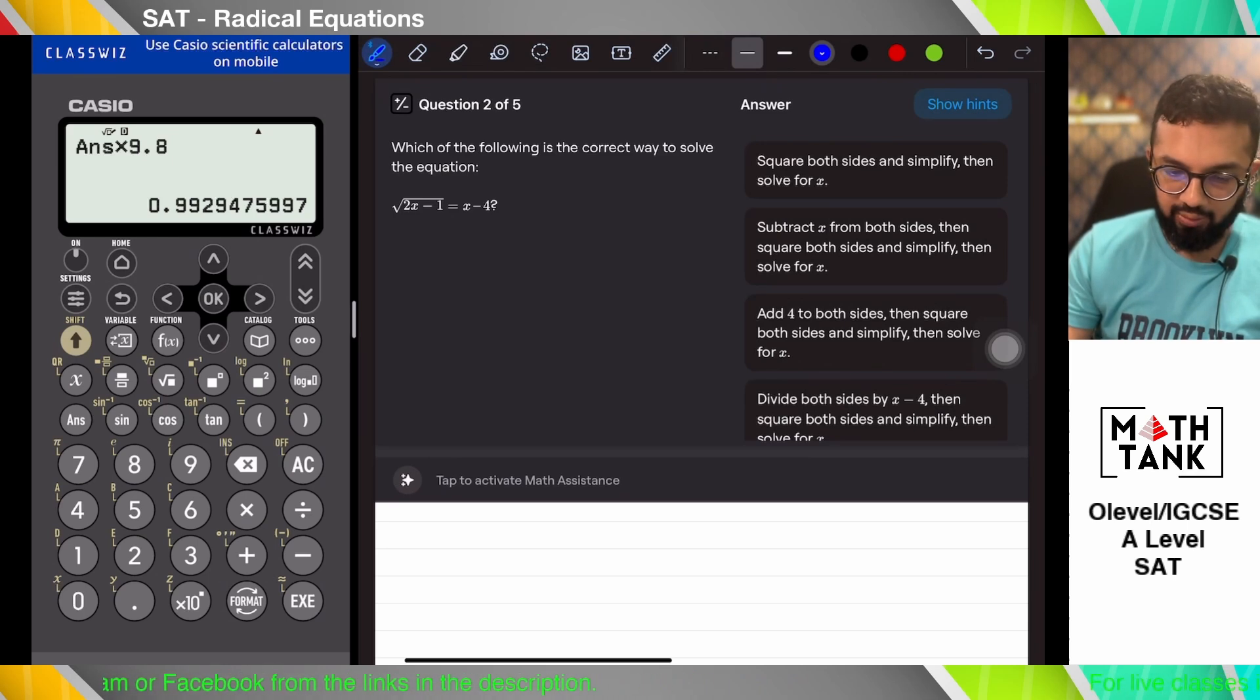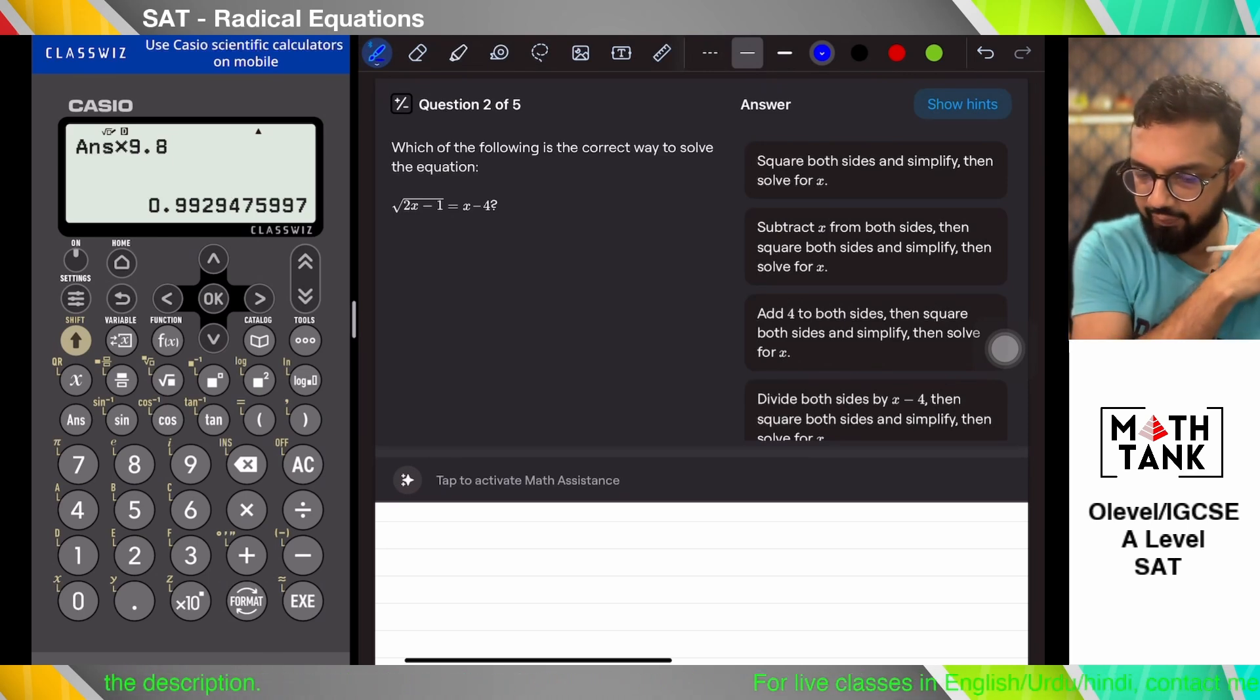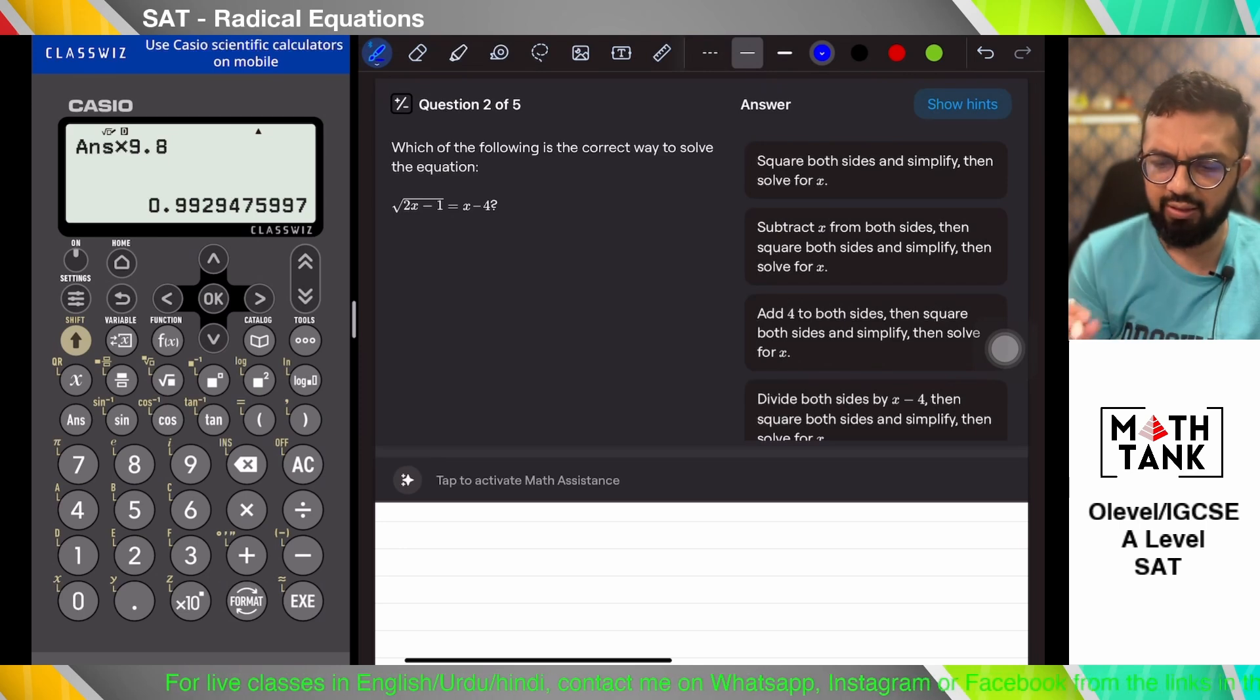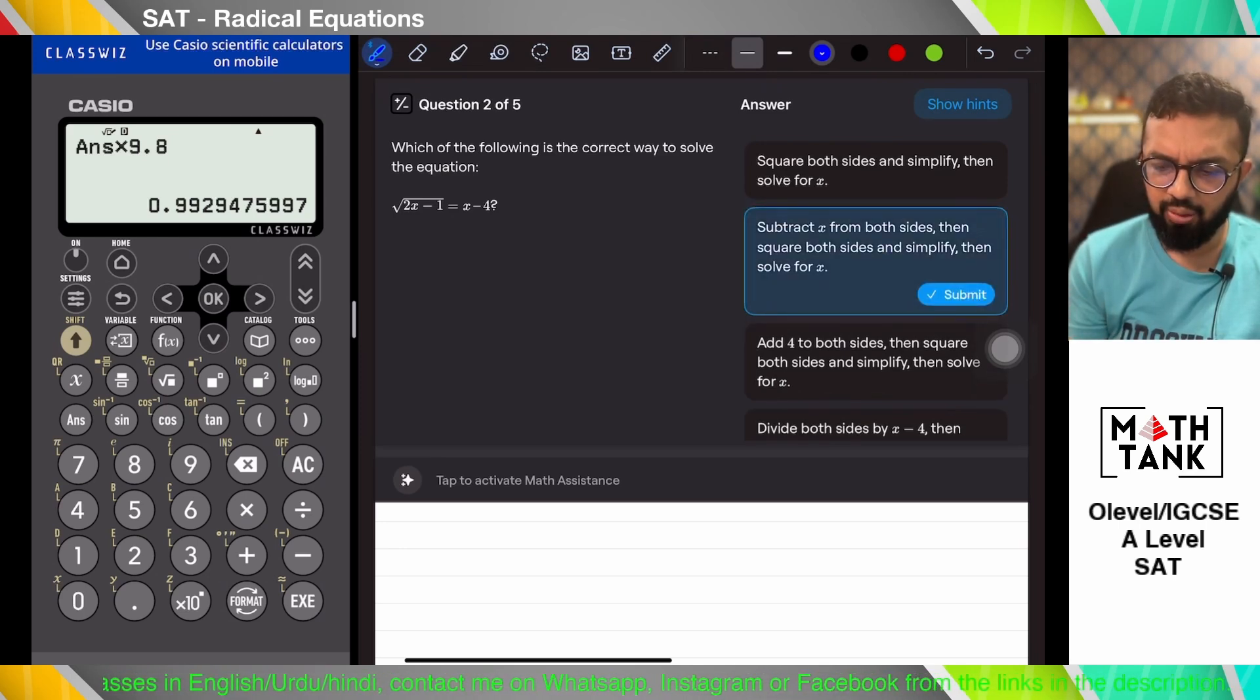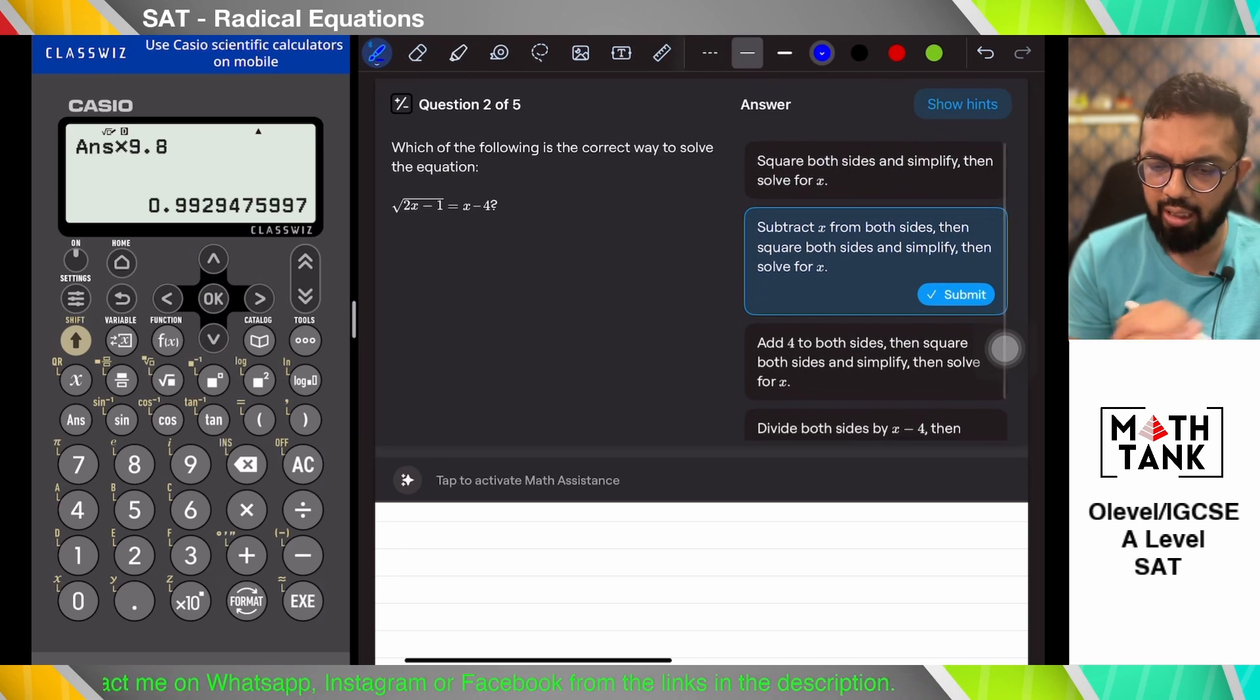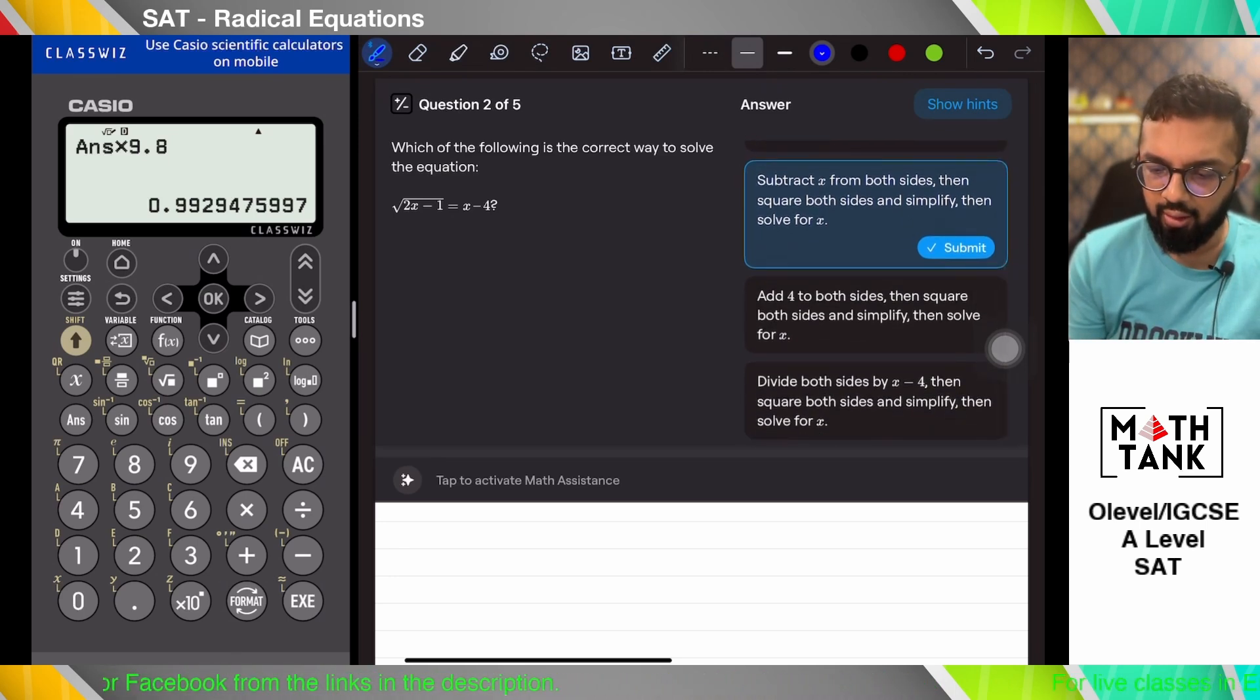Which of the following is the correct way to solve the equation? It says square both sides and simplify and solve for x. Subtract x from both sides, then that might not work because then you are going to end up right now. The main idea is if you have a root isolated on one side, you can just square it and get it done with.